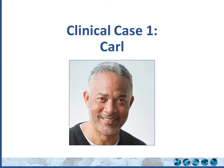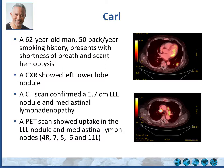Let's start with the clinical case. Carl is a 62-year-old with a 50 pack-year smoking history who presents with shortness of breath and scant hemoptysis. A chest x-ray showed a left lower lobe nodule confirmed on CT. PET scan revealed mediastinal lymphadenopathy with uptake in the left lower lobe nodule, as well as mediastinal uptake at levels 5, 6, 4R, and 11L — the interlobar or infrahilar lymph node.